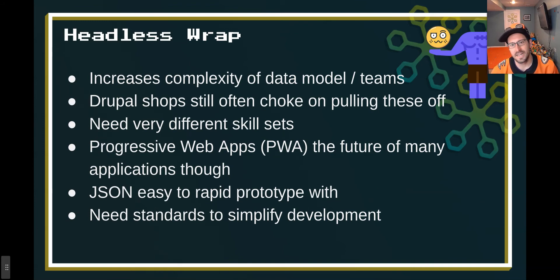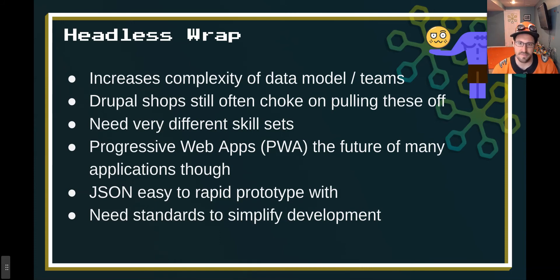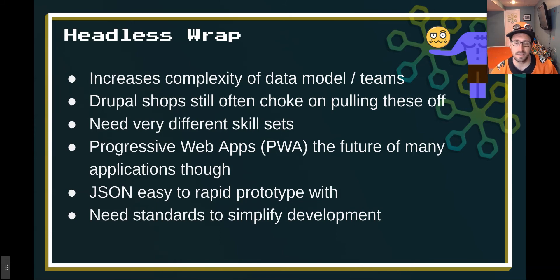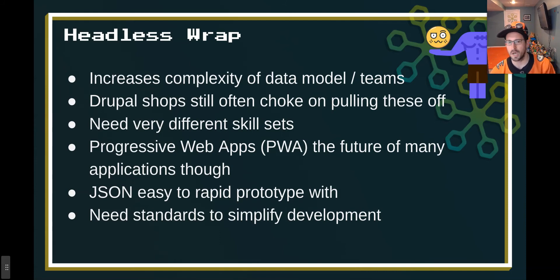Wrapping that up: it increases complexity of data model and teams. I've talked to Drupal shops that have choked on these, or the bill instantly goes up. You need some very different skill sets. JSON is great for rapid prototyping — I've loved working in this way. Also, if you're interested in progressive web apps, this is more or less the direction everything is going. It's not these monolithic giant render-on-the-backend-and-output systems. So you are going to be future ready learning this stuff.